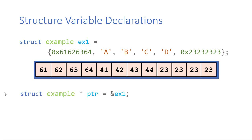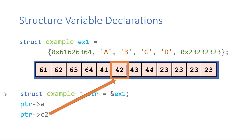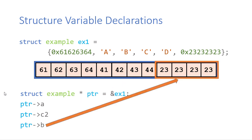Now let's assume we have a pointer. If we have a pointer to this structure, we can access the fields — so pointer A would be this first integer field. I could access the character fields, and then I could also access field B. I also want to be clear: this is not necessarily the way the bytes are arranged in memory — that's implementation dependent. I'm assuming that the bytes are laid out exactly the way they appear in the initialization, but the order could be changed, and we'll actually see that once we get into the code.